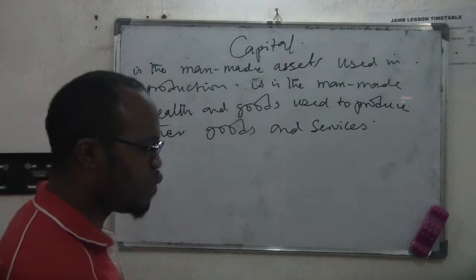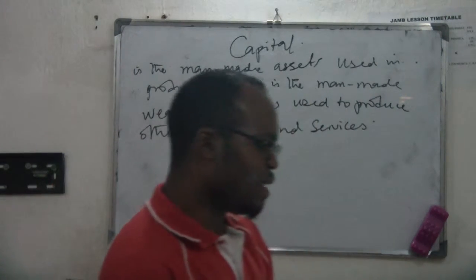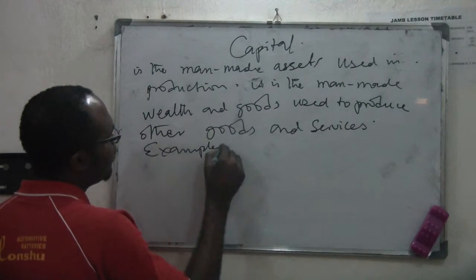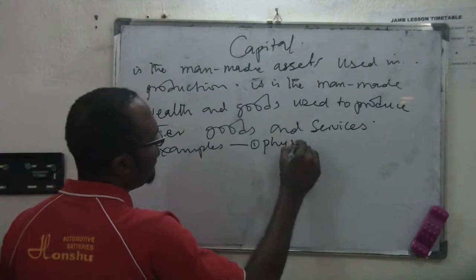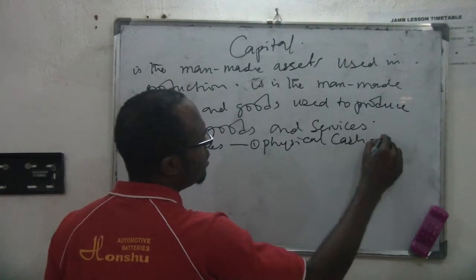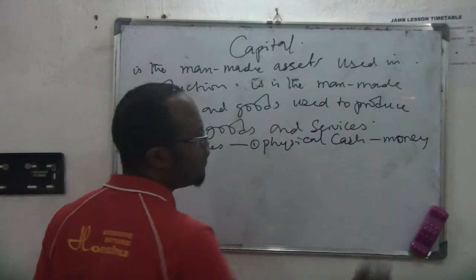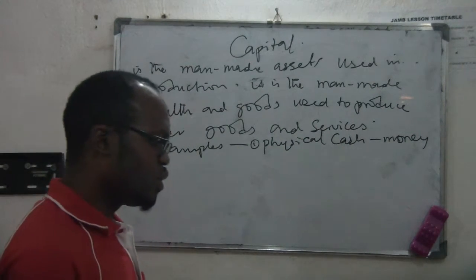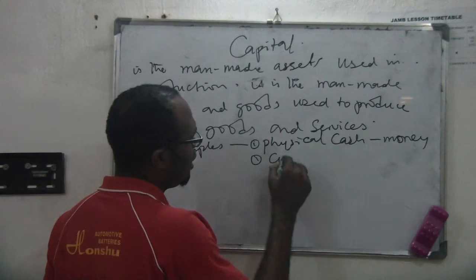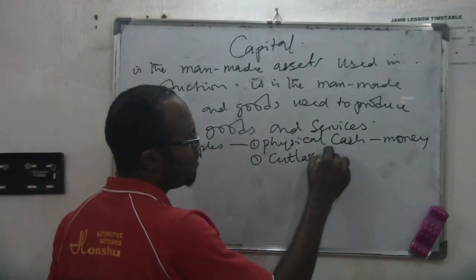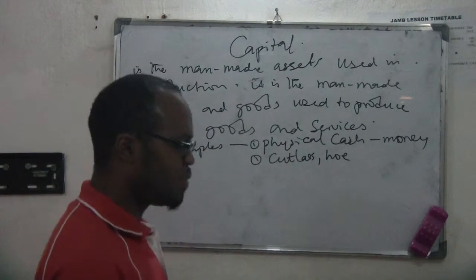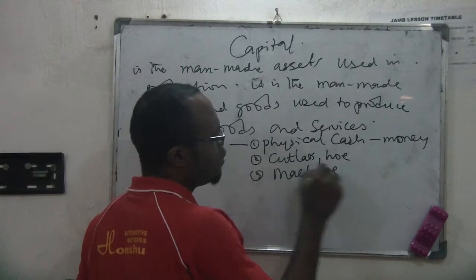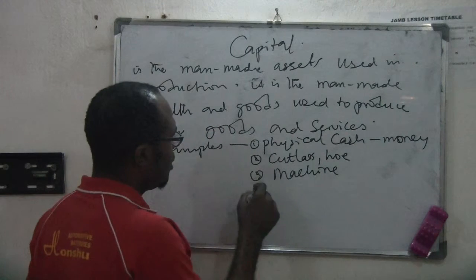Capital may also be defined as the stock of previous wealth invested in order to produce future wealth. Examples of capital include physical cash, which is money — but money is not the only capital. We also have things like a cutlass used in farming. All of them are capital. Then we have machines — all those machines you use in production, they are your capital.